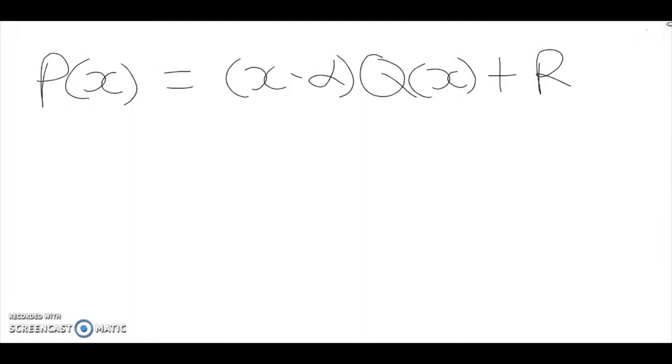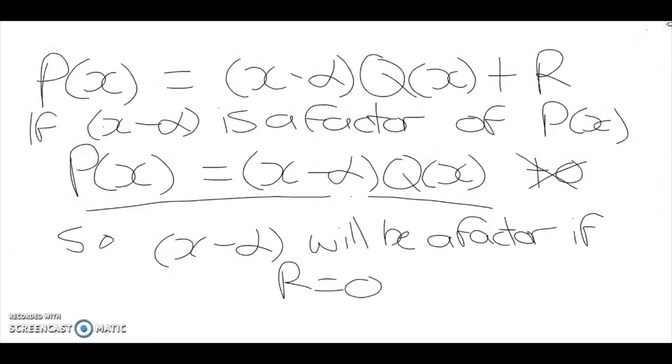Well, by the factor theorem, any polynomial divided by a factor will have a remainder of zero. So we can almost omit that—it'll just look like this form here from our long division. There is no constant added to this factorized term.